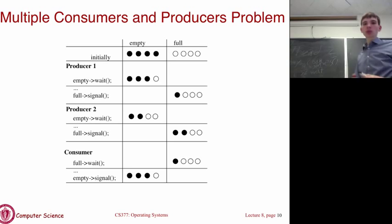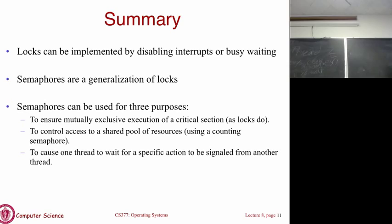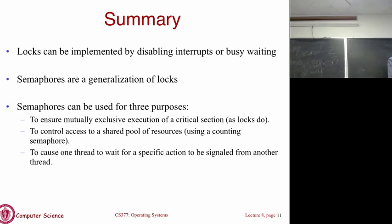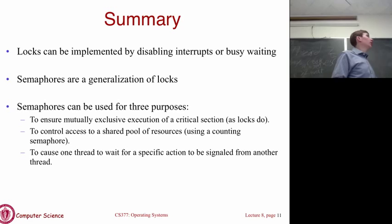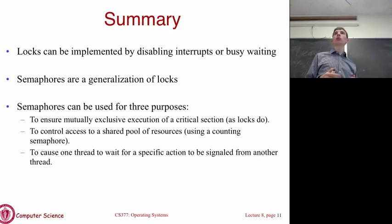To summarize semaphores: they generalize locks and have three main use cases. First, as a direct lock replacement using a binary semaphore with initial value one. Second, managing a shared pool of resources using a counting semaphore with initial value N. Third, waiting for a specific action from another thread using a semaphore initialized to zero — this enforces that one thing happens before another.